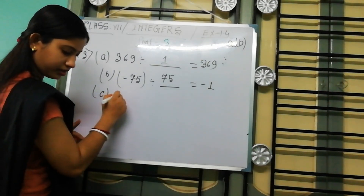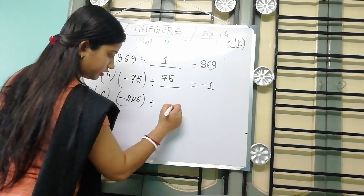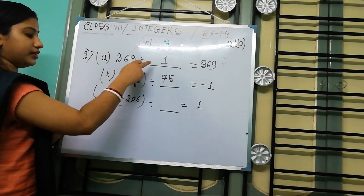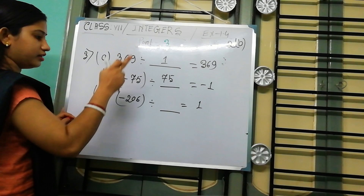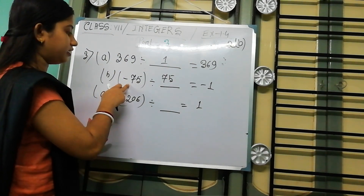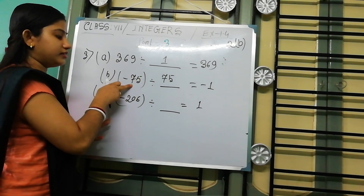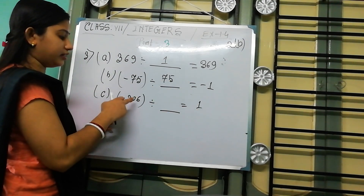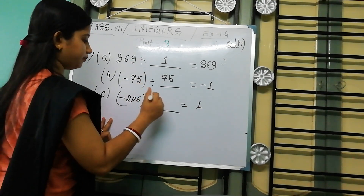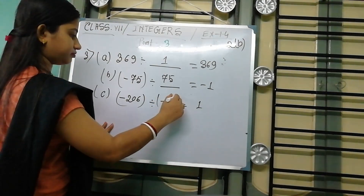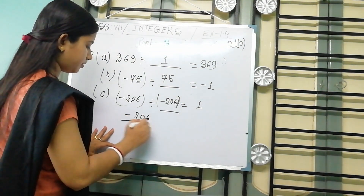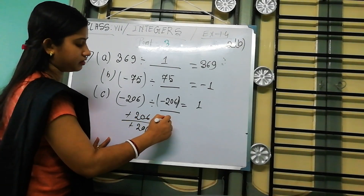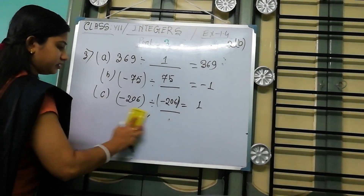Next, Part C: minus 206 divided by blank equals 1. From Part A we know that if we divide a number by 1 we get that number. But here we need to get 1, so if we divide it by the same number, we get 1. So the answer is minus 206, because minus 206 divided by minus 206 equals 1: the two minus signs cancel and 206 by 206 is 1.